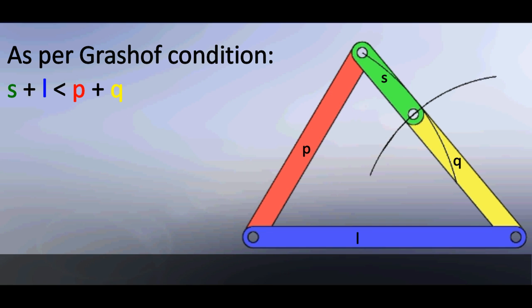As per Grashof condition, in a 4 bar mechanism, for at least one link to make a complete revolution with respect to ground link, sum of lengths of shortest link and longest link must be less than the sum of lengths of other two links. Therefore, S plus L is less than P plus Q.